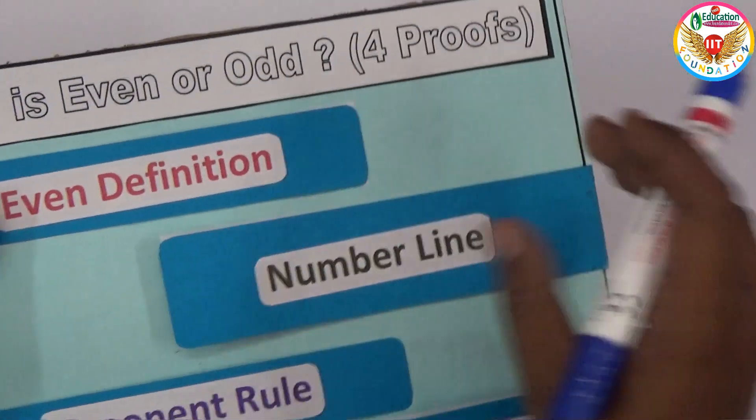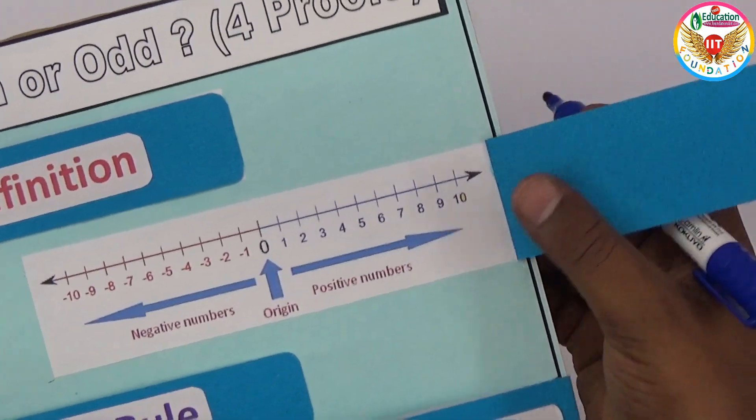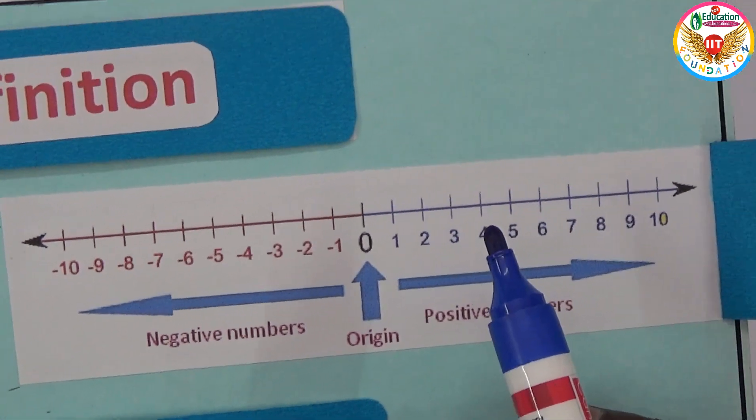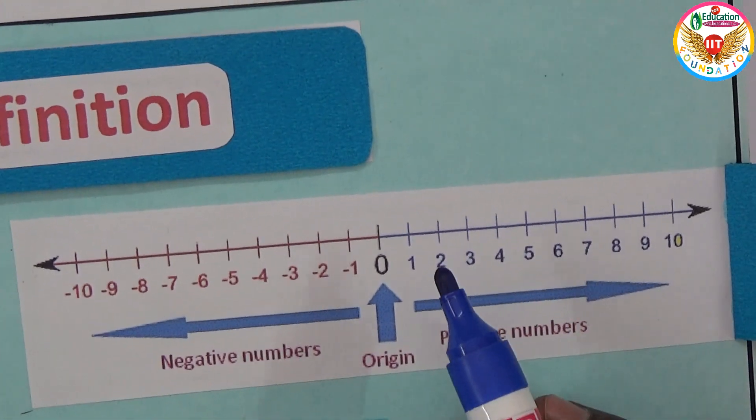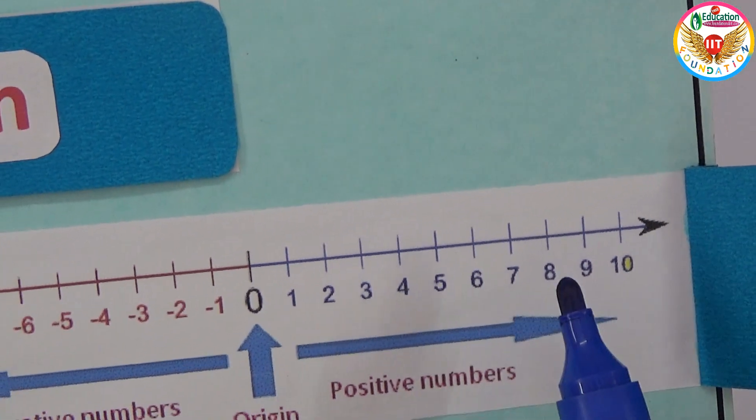Now let's take one more. Let's take the number line proof. If you observe this number line, you know the even numbers: two, four, six, eight.